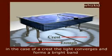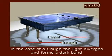In the case of a crest, the light converges and forms a bright band. In the case of a trough, the light diverges and forms a dark band.